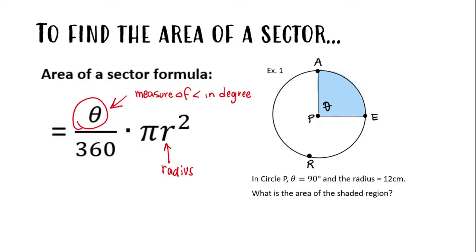So to find the area of a sector, we do the measure of the angle divided by 360 times the area of the circle. Let's practice with an example.